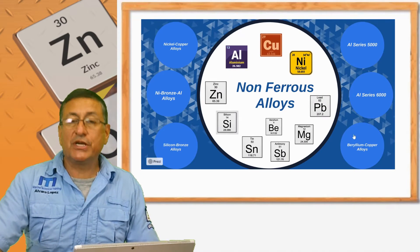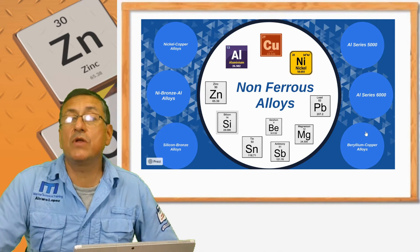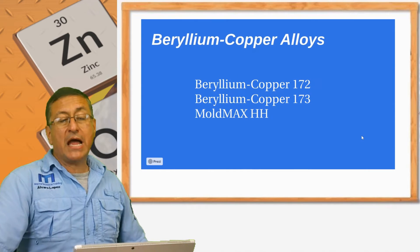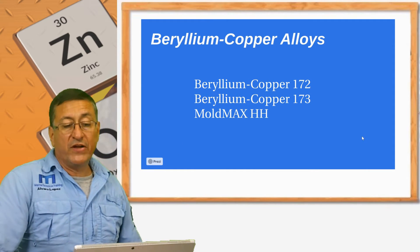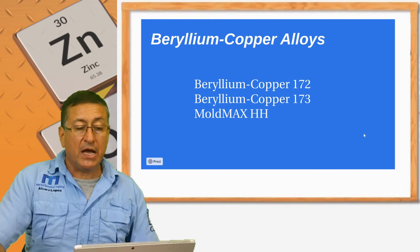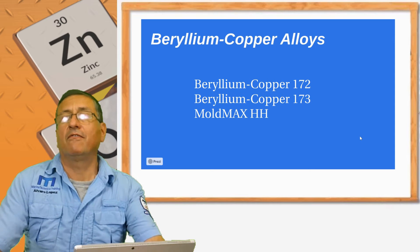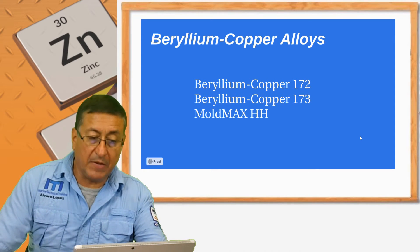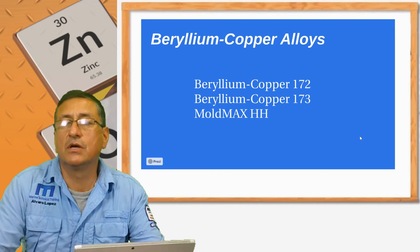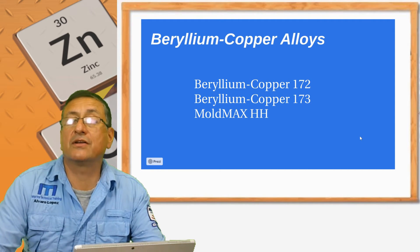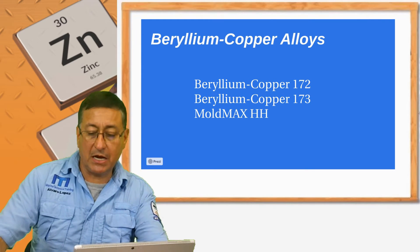Now we are going to check non-ferrous alloys based on beryllium and copper. The most famous are beryllium copper 172, beryllium copper 173, and Mold Max — a famous beryllium copper alloy with high resistance to corrosion and high resistance to acids, commonly used in marine applications.